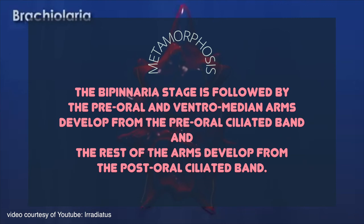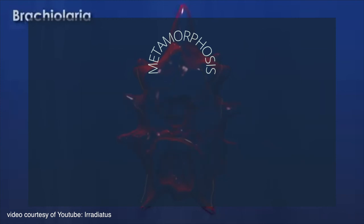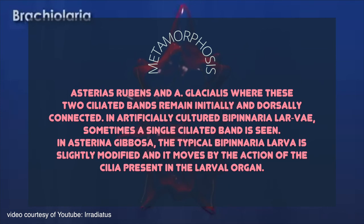The anterolateral arms are absent. These two ciliated bands are regarded to have arisen from a single ciliated band which becomes subsequently divided. This is evidenced by Asterias rubens and Asterias glacialis, where these two ciliated bands remain initially and dorsally connected. In artificially cultured bipinnaria larvae, sometimes a single ciliated band is seen.